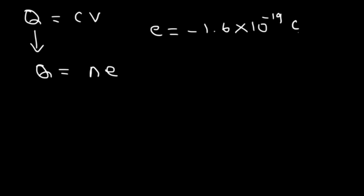So this charge is discrete — that's the lowest charge that an electron can have. Every electron has that charge. You can't have a charge that's less than that unless you have a fraction of an electron. So charge is quantized.